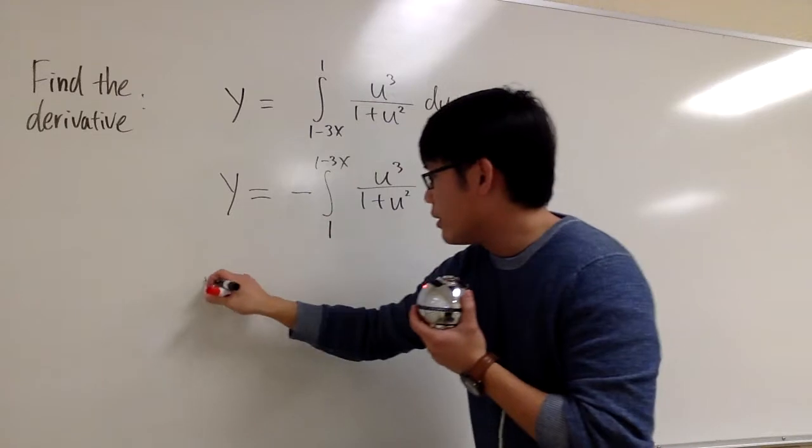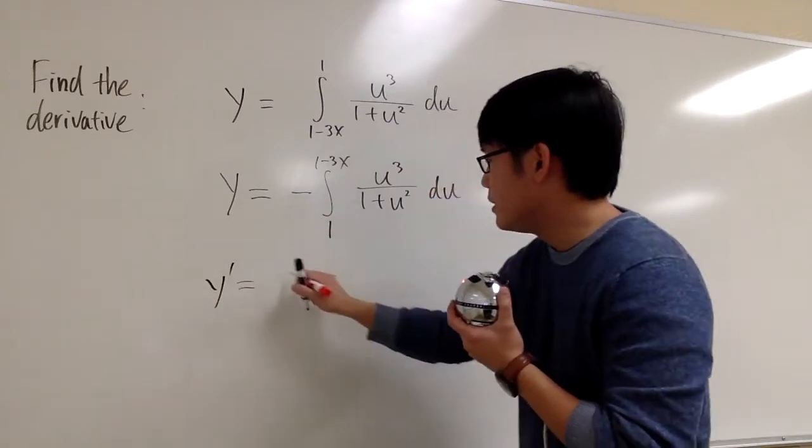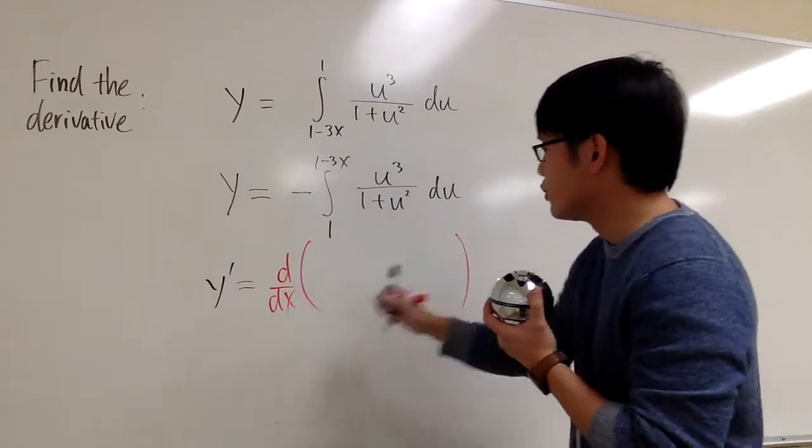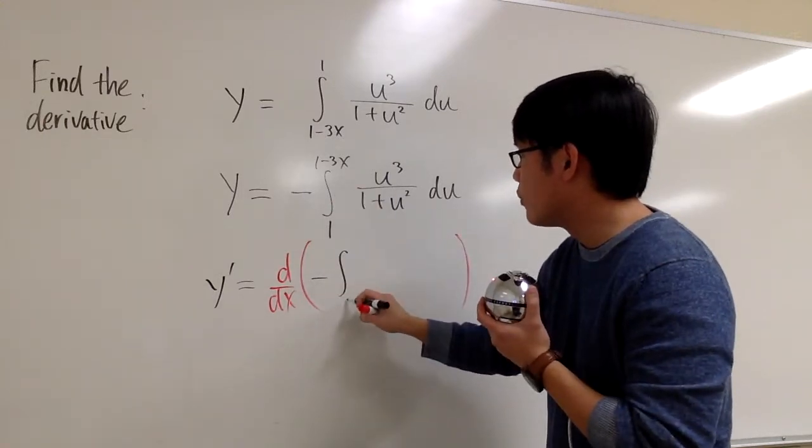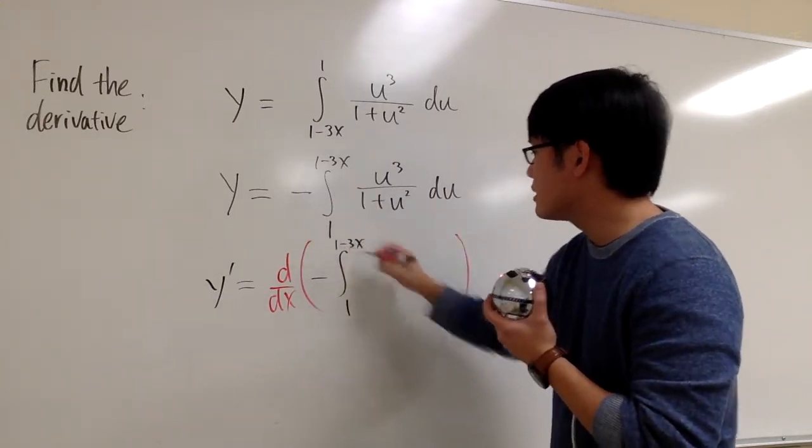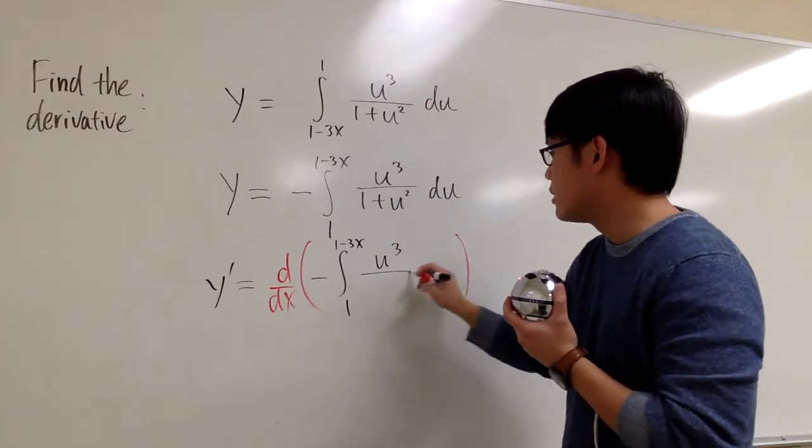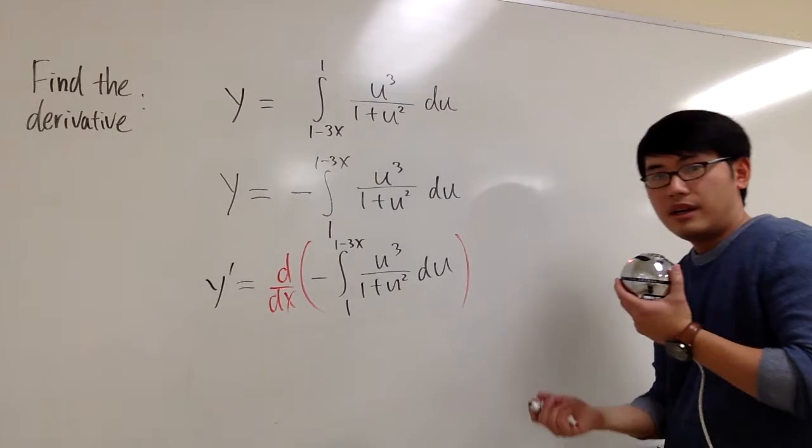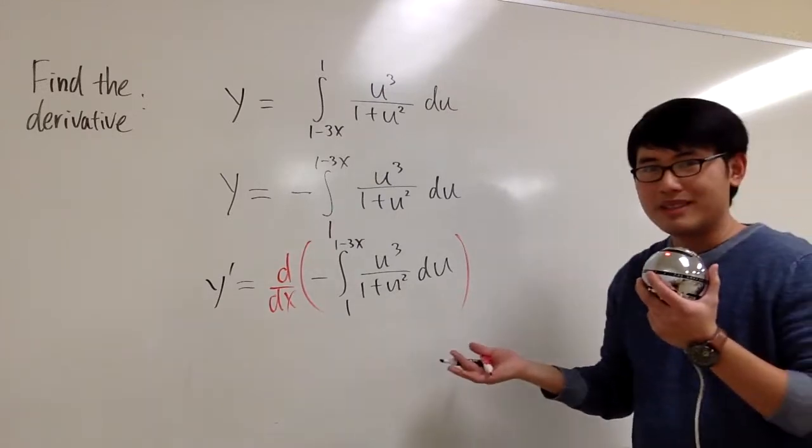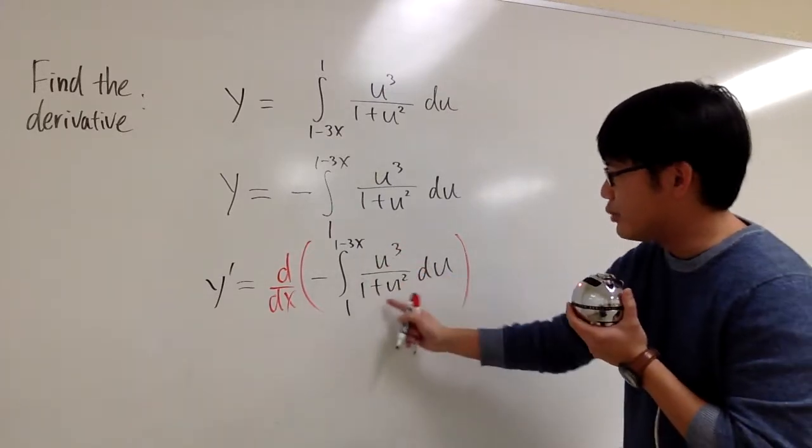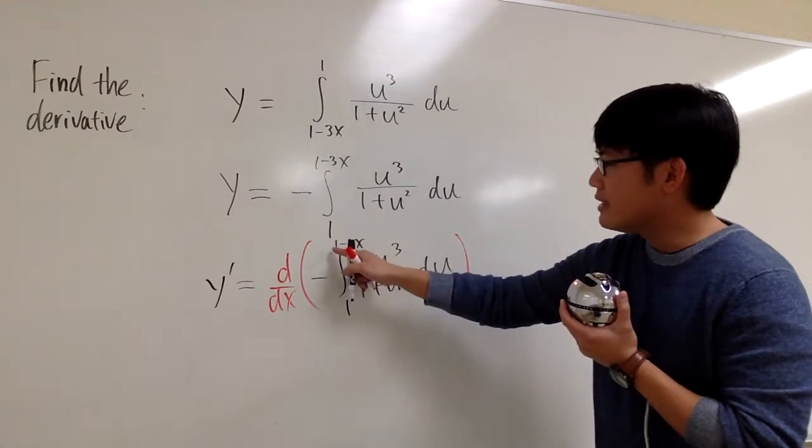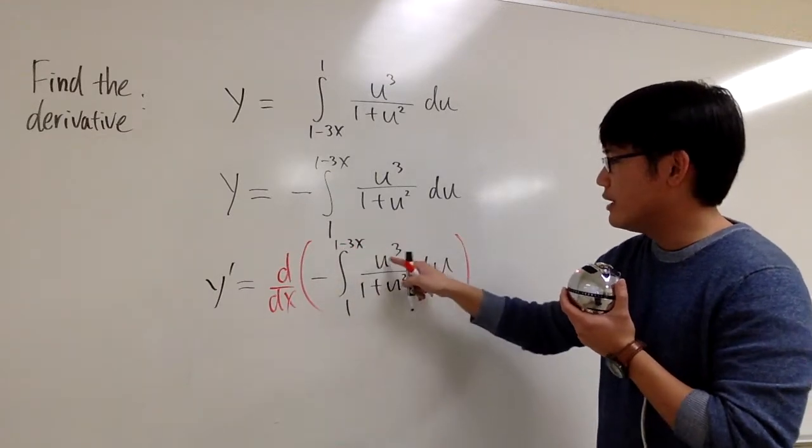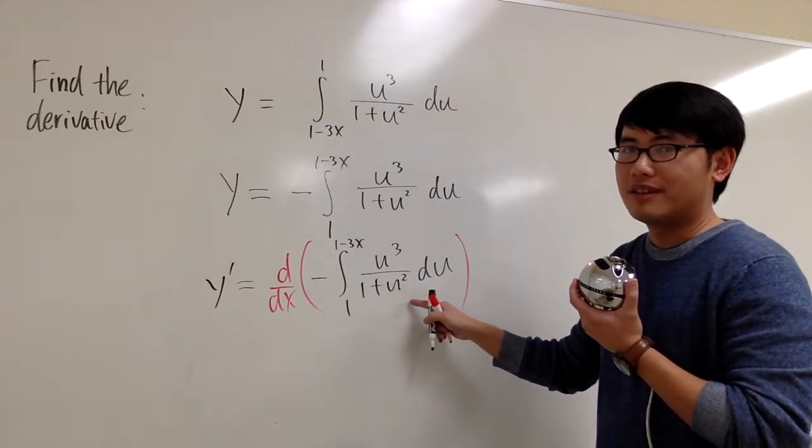And we are ready to go. y prime. This is going to be taking the derivative of this part: the derivative of negative integral from 1 to 1 minus 3x of u³ over 1 plus u² du. And how do we do FTC1? Look at the expression right here. Plug in the part that has x, which is 1 minus 3x. Plug in 1 minus 3x into all the variables you have in here. That's all.